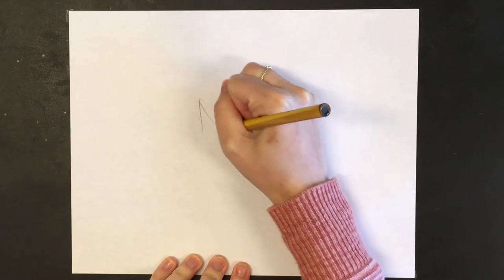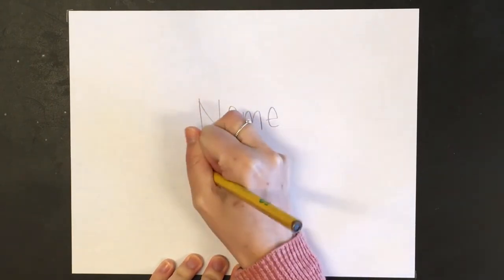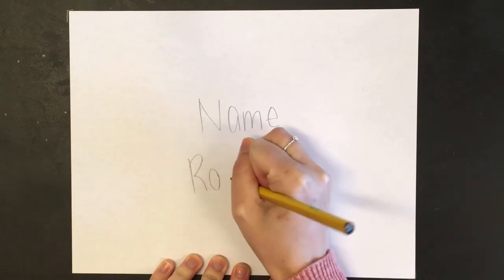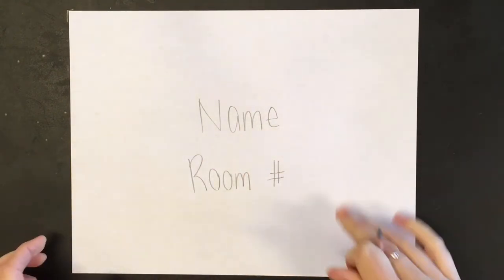The first thing you're going to do is use your pencil to write your name and, if you know it, your room number on the back of your artwork. Then flip it over so I can't see your name anymore. We are going to be holding our paper horizontally for this project.